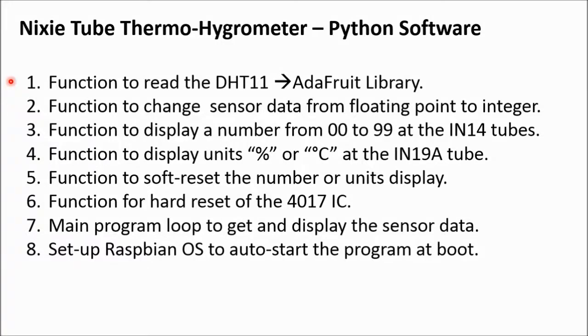For the software, these are basically the functions that you will need. A function to read the DHT11. For this I use the Adafruit library, which is really very convenient. Then you need a function to change the sensor data from floating point to integer, so you can use it as a counter in a for loop. A function to display a number from 0 to 99 at the IN14 tubes. A function to display the units percentage or degrees centigrade at the IN19A tube. Then a function to soft reset the number of units displayed. With the soft reset, I actually keep counting until the counter is again at 0. Still I need a function for a hard reset of the 4017 IC from time to time to make sure that it does not count wrong. Then we need a main program loop to get and display the sensor data. And of course we'll need to set up the Raspbian operating system to auto start the program at boot.